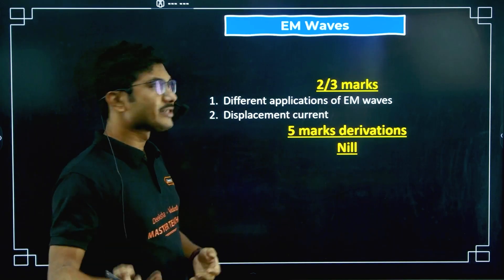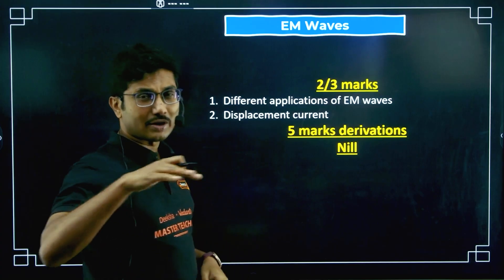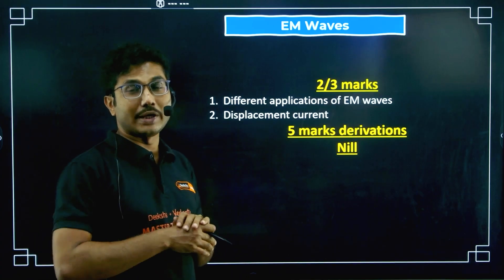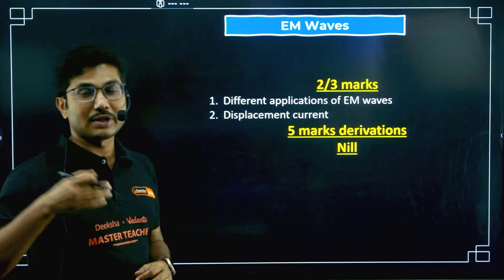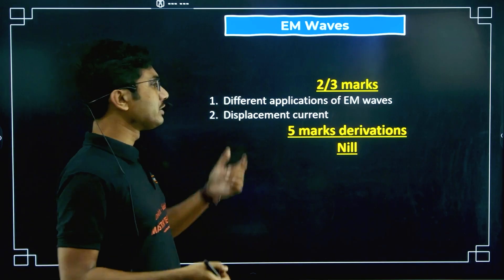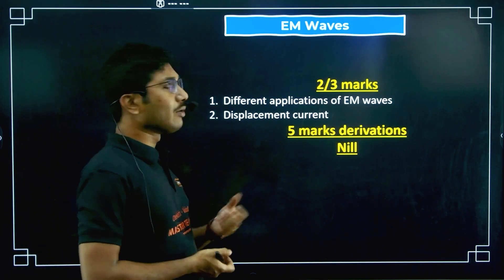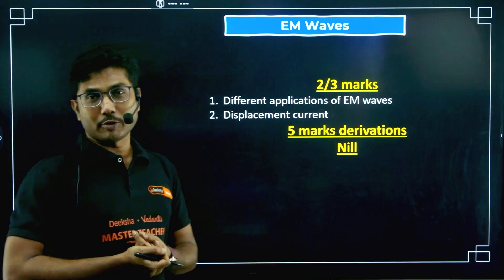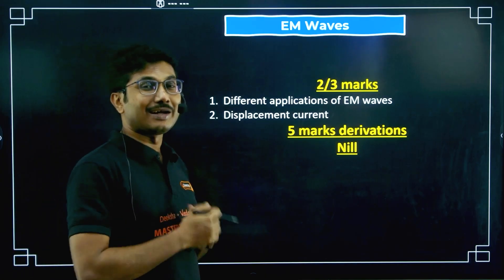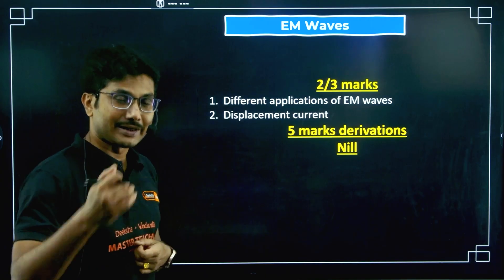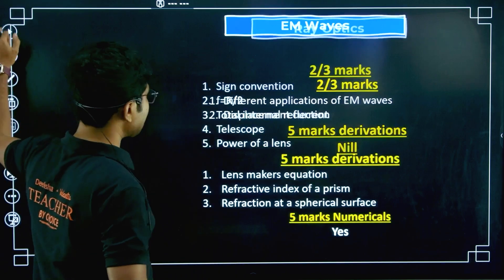EMO (Electromagnetic Waves) is the smallest chapter. Different applications of EM waves will come: applications of UV waves, X-rays, gamma rays, and radio waves. One more common concept from this chapter is displacement current — write the expression for displacement current and explain the terms. That is also a very very common question from this chapter.